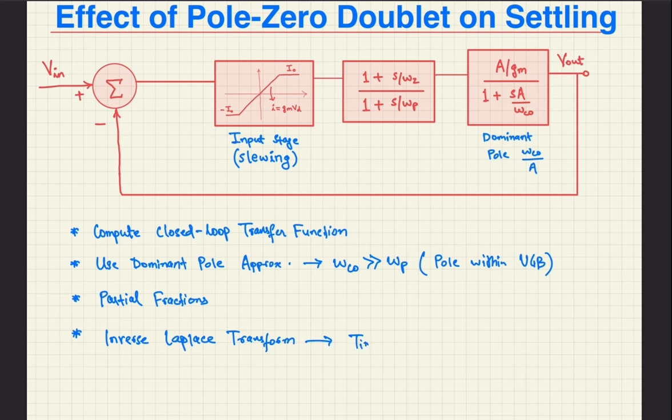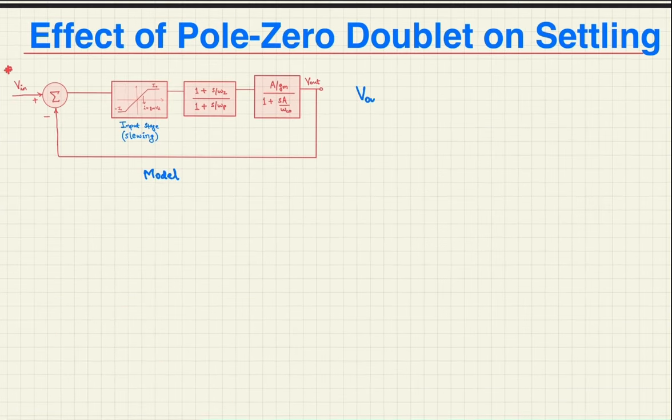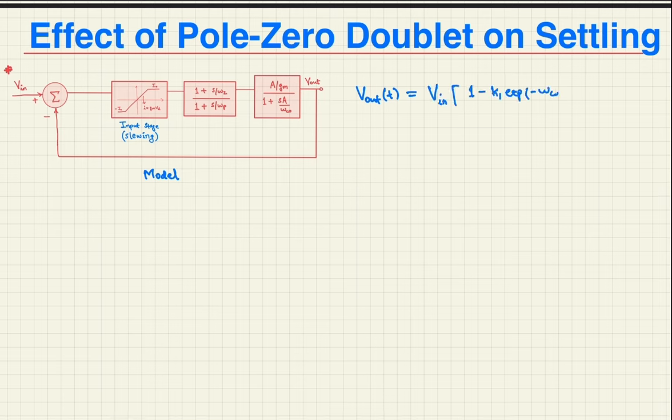In the reference, the authors have done the analysis to get the expression for V out as a function of time, which is equal to V in times 1 minus k1 times exponential of minus omega C0 t plus k2 times exponential of minus omega Z t. And this expression is valid for T greater than TS, where TS is the slewing period.